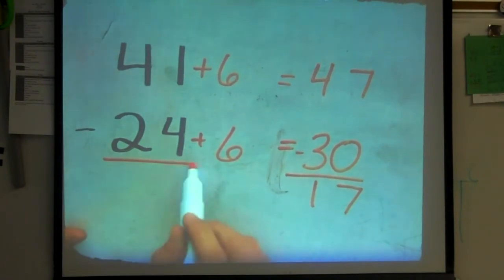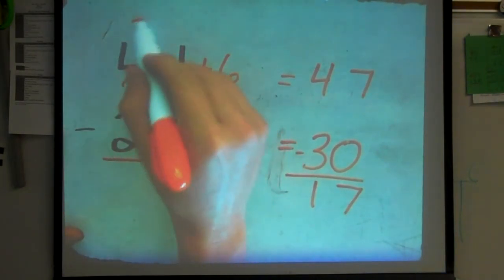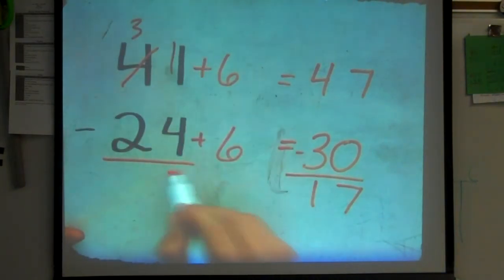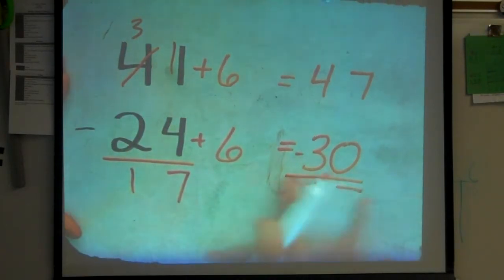So, if I actually wanted to work this out, I'd have to borrow. That becomes a 3. That becomes 11. 11 minus 4 gives me 7. 3 minus 2 gives me 17. So I'm getting the same answer.